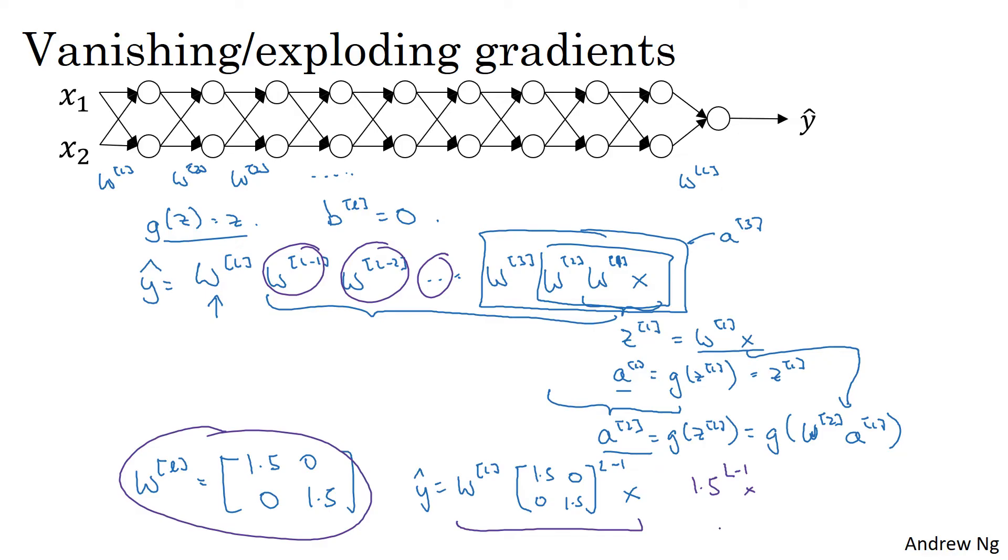And if L is large for a very deep neural network, y hat will be very large. In fact, this grows exponentially. It grows like 1.5 to the number of layers. And so, if you have a very deep neural network, the value of y will explode.